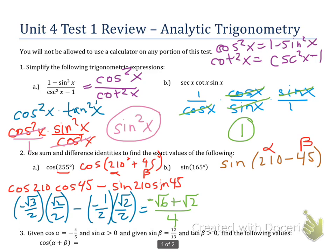So this becomes the sine of 210, sine of 45, whoops, sorry, that's wrong. Sine of 210 times the cosine of 45.